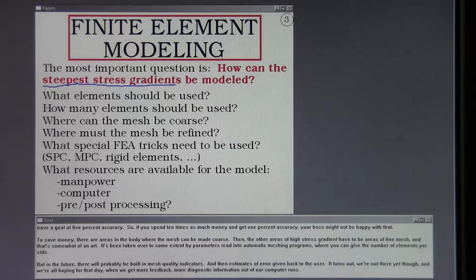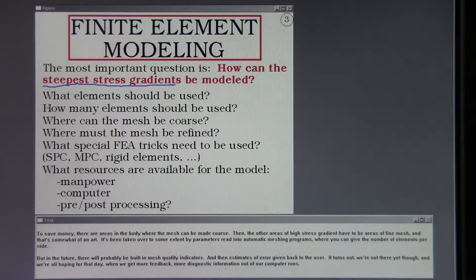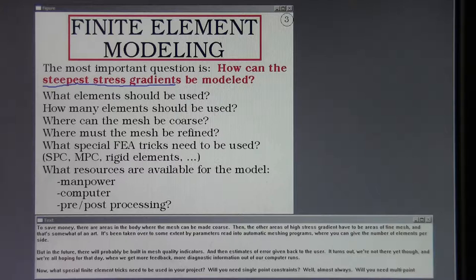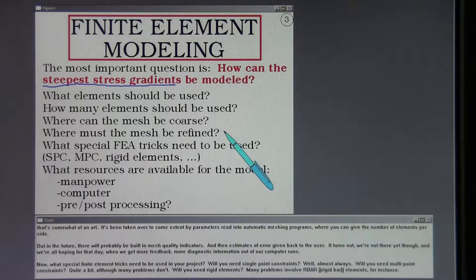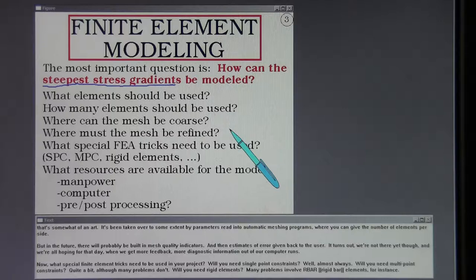It's been taken over to some extent by parameters read into automatic meshing programs where you can give the number of finite elements per side. But in the future, there will probably be built-in mesh quality indicators and then estimates of error given back to the user. It turns out we're not there yet, though, and we're all hoping for that day when we get more feedback, more diagnostic information out of our computer runs.